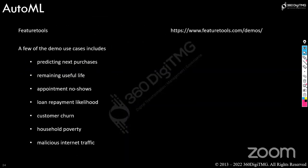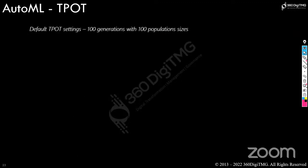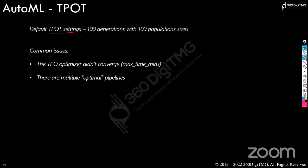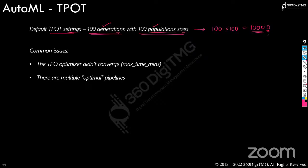TPOT has a default option of trying out 100 different pipelines, and for each algorithm it experiments with 100 different hyperparameter settings — so 100 times 100 equals 10,000 different pipelines that TPOT builds by default. This makes it time consuming. If you set it to run for 15 minutes, it runs for 15 minutes and stops — it may not try all options within that time. TPOT might also give you multiple optimal pipelines, and you need to choose the best one.